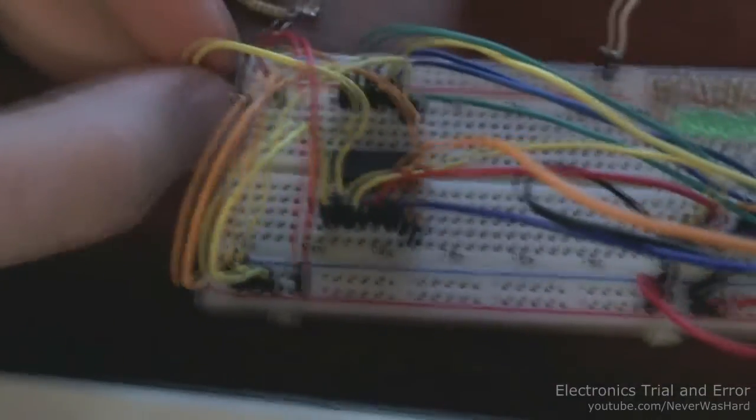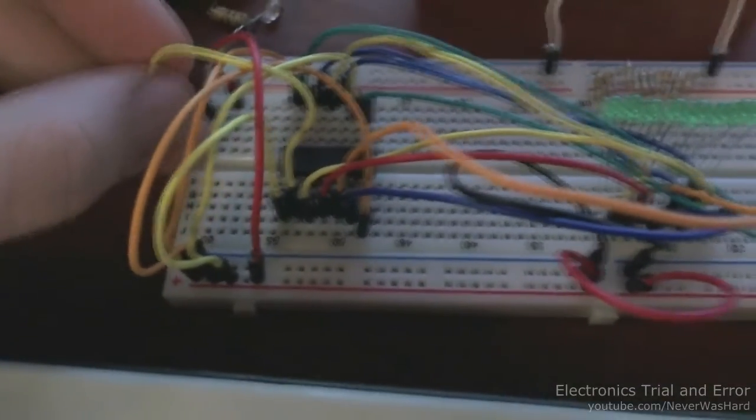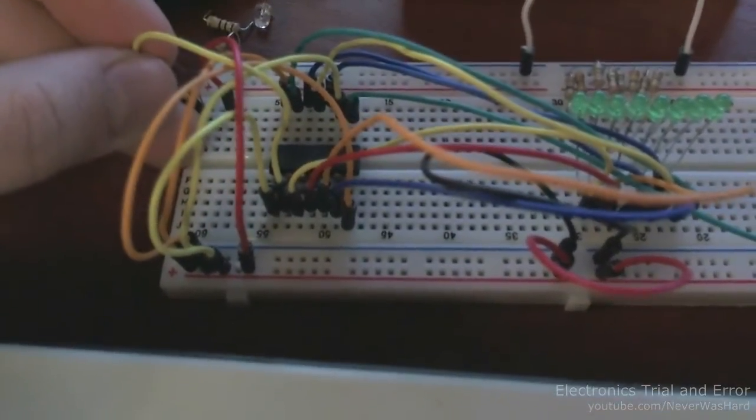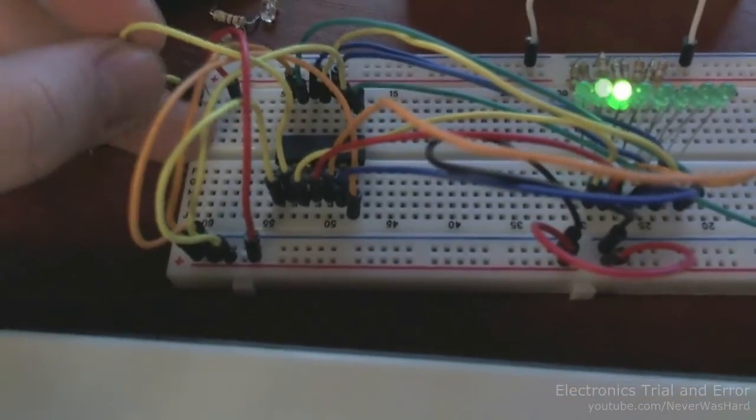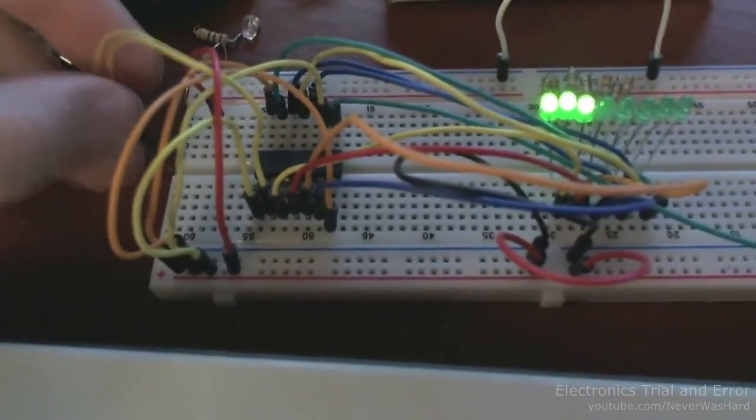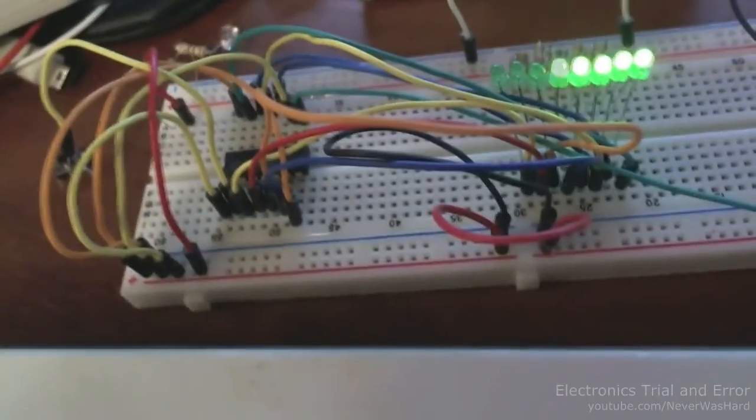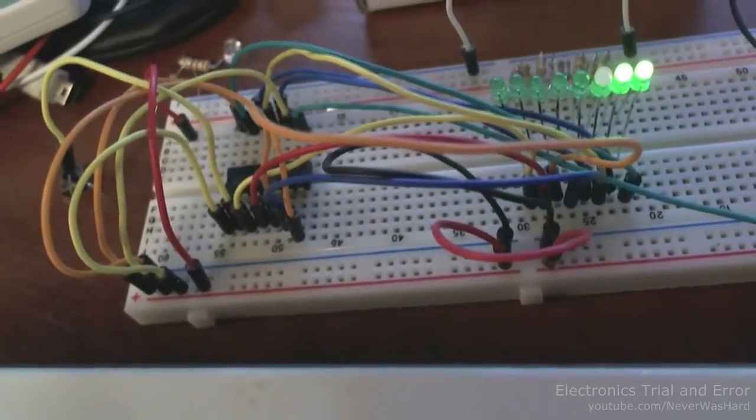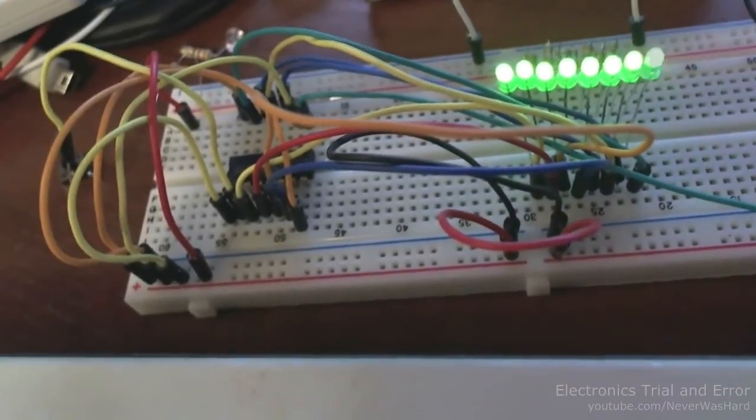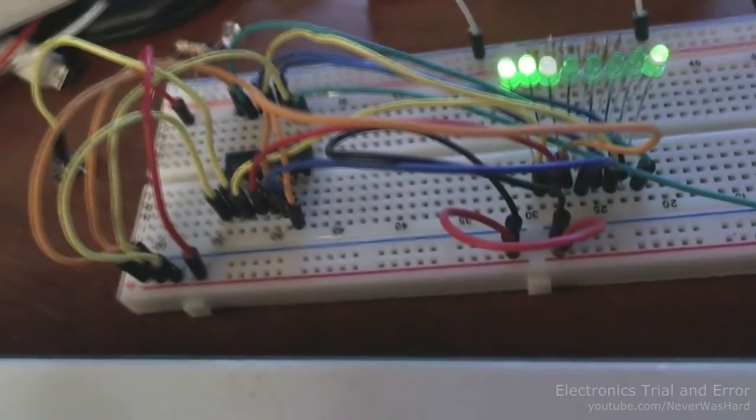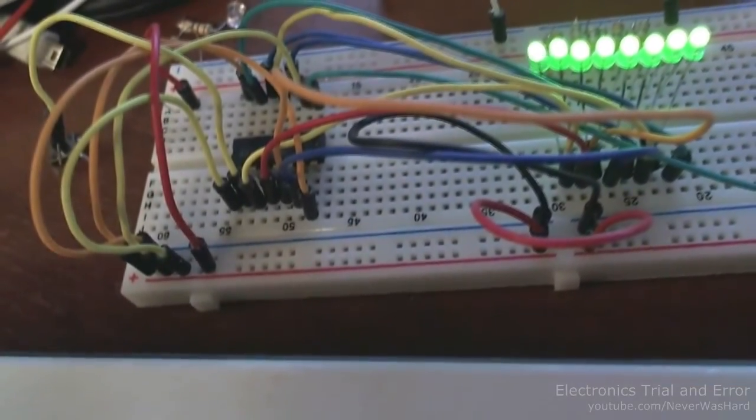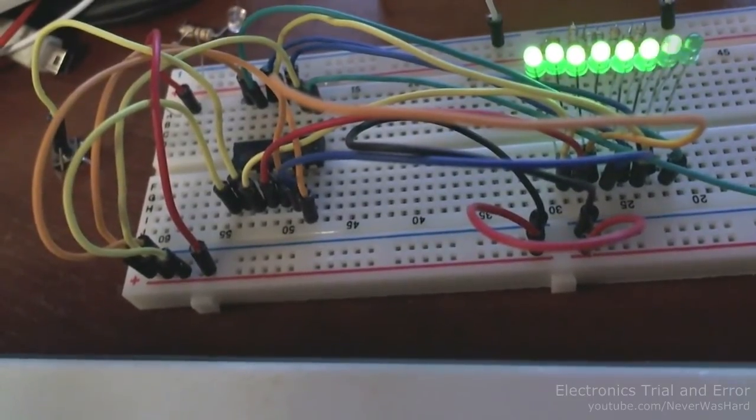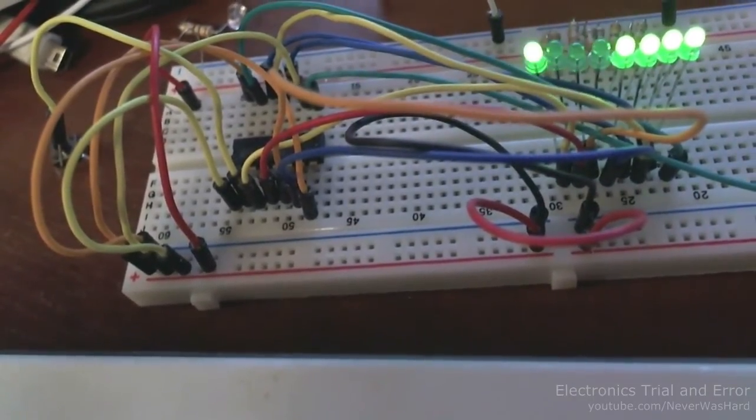Let's see what happens when we remove the data input from the circuit and make it hanging. And as we can see, the state of the data input is quite random. It could be some kind of noise present in the plus 5 volt line of Arduino.